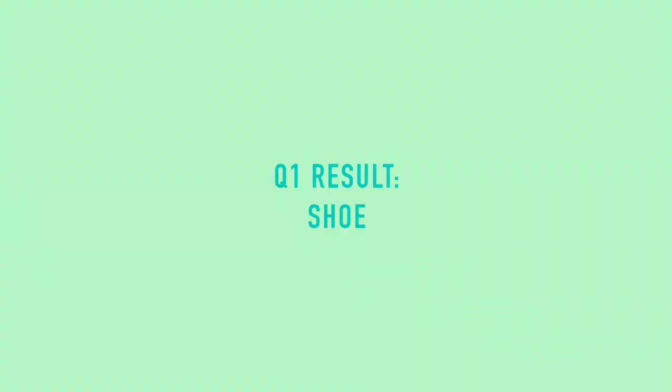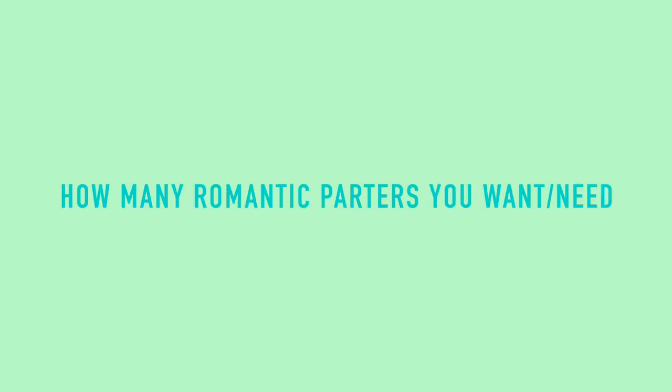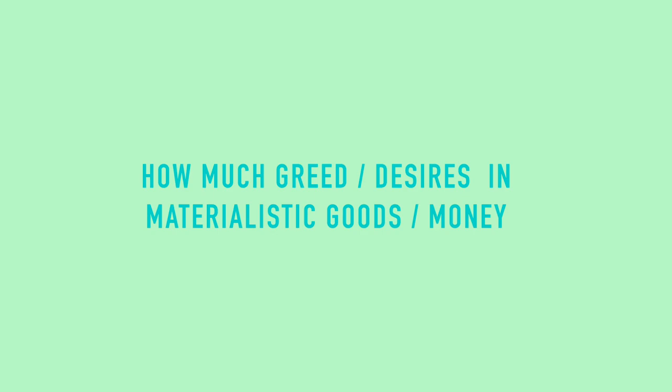Let's look at what our answers mean. Question one — how many pairs of shoes you'd take — reveals how many romantic partners you want or need. I put a lot, about five pairs! Question two — how many fruits you ate — shows your level of greed and materialistic desires for wealth. I said a full belly, so I guess I do have high expectations when it comes to material things, which is somewhat true.